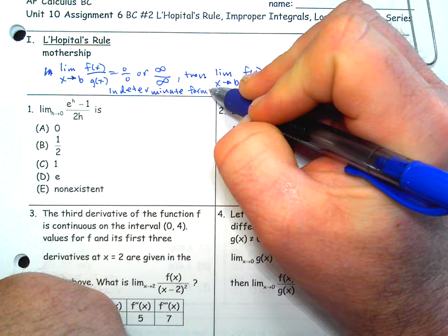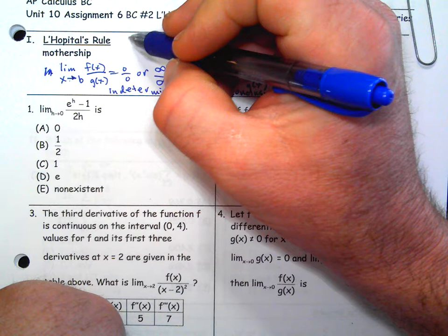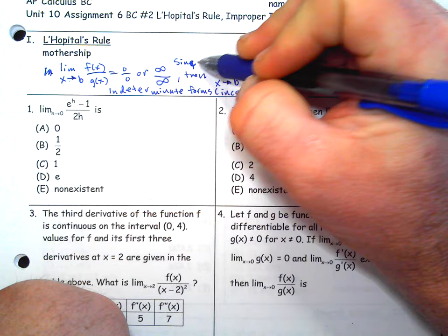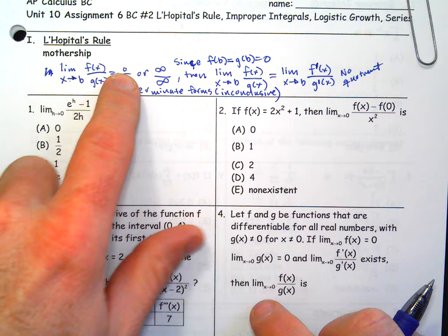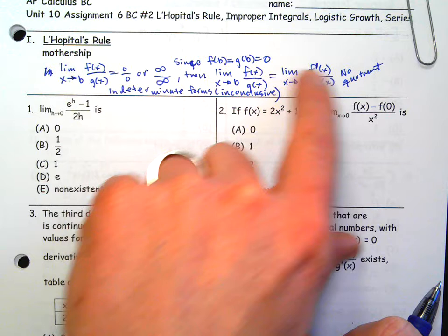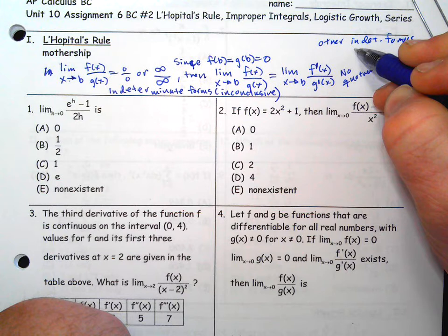So in other words, they're inconclusive — a term that we've been using quite a bit lately with series. Now for a response, you would need to technically say that since f(b) equals g(b) equals 0, then you're going to write this. We can't say that the limit equals 0 over 0 equals this. If this happens, this is the more proper way of stating it — then you can rewrite the original limit as this new limit.